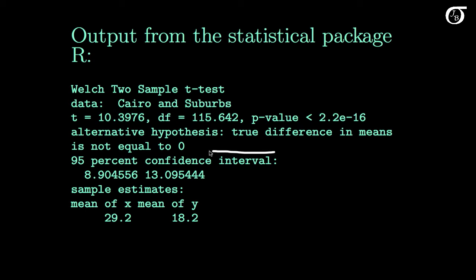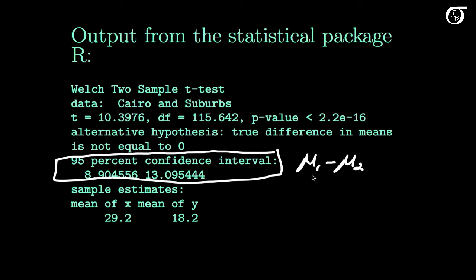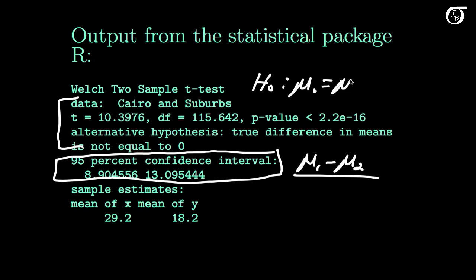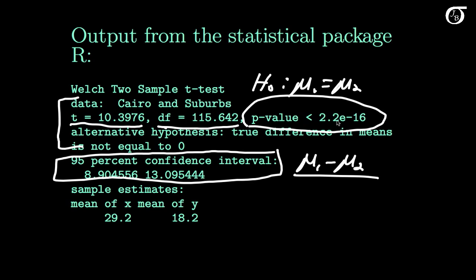Here's the output from the statistical package R. It gives the 95% confidence interval for mu1 minus mu2, similar to what we calculated but with more decimal places. The test of the null hypothesis that mu1 equals mu2 gives a t statistic similar to ours, the degrees of freedom computed automatically, and a p-value less than 2.2 times 10 to the negative 16 — a tiny p-value confirming very strong evidence against the null. The difference in sample means is highly significant.